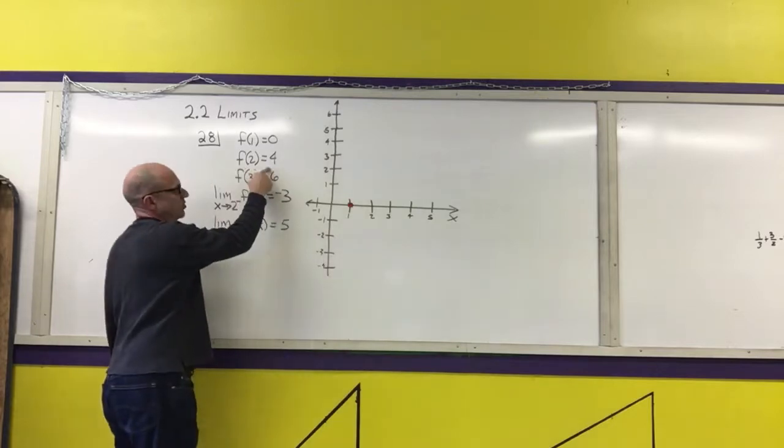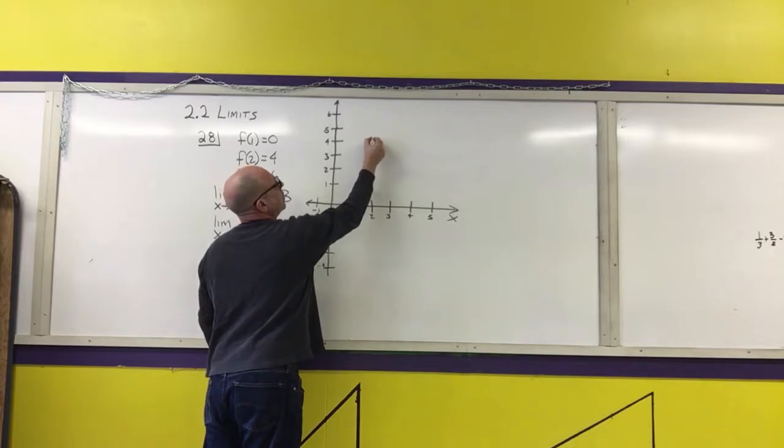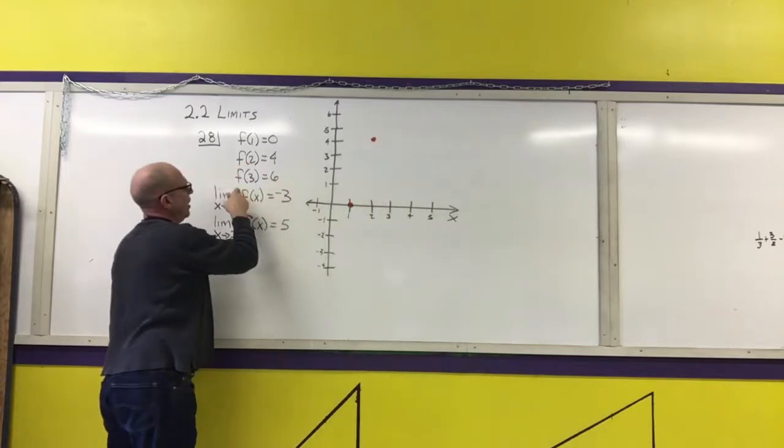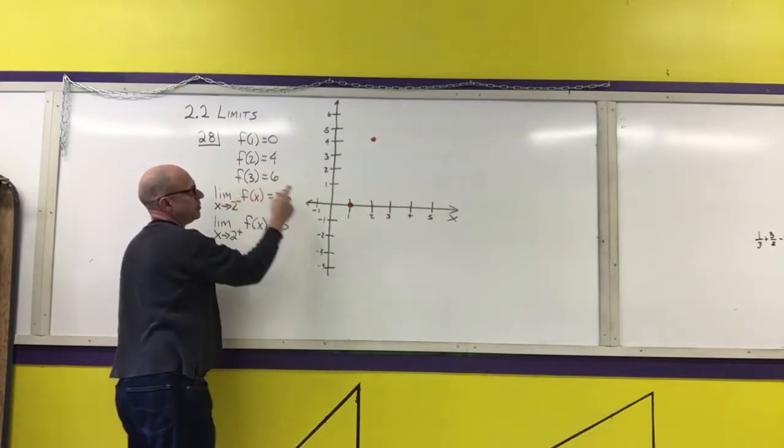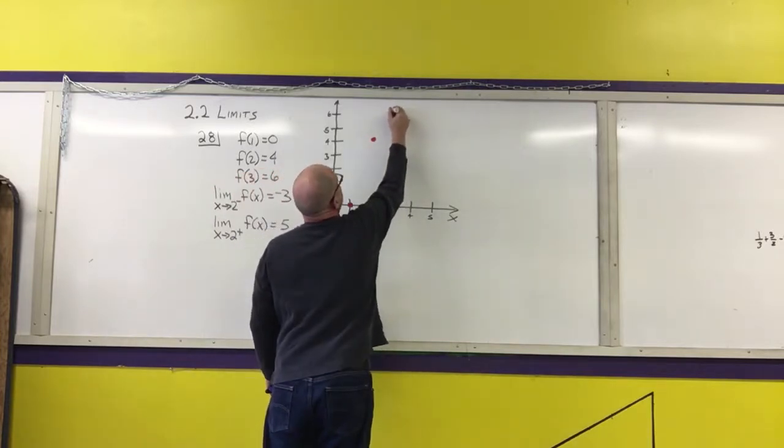F of 2 is 4, so when x is 2, y is 4. F of 3 is 6, so when x is 3, y is 6.